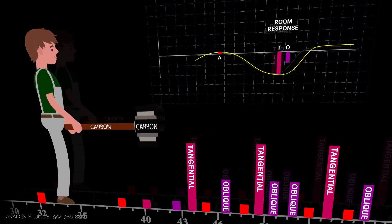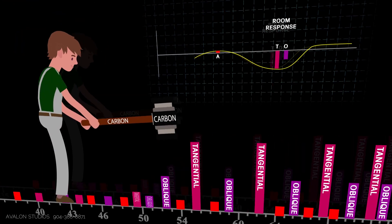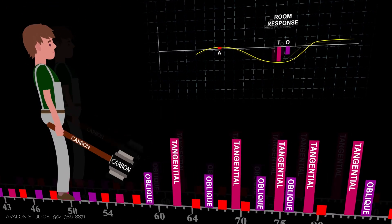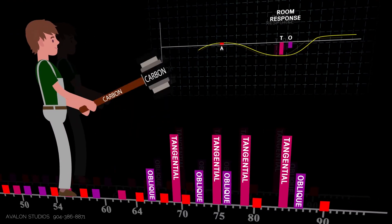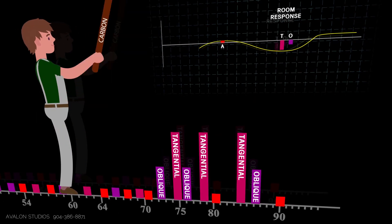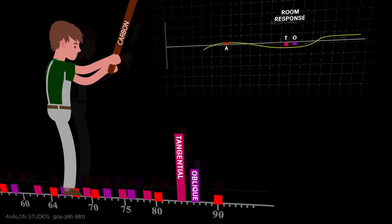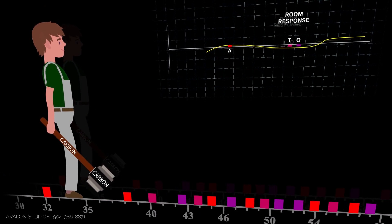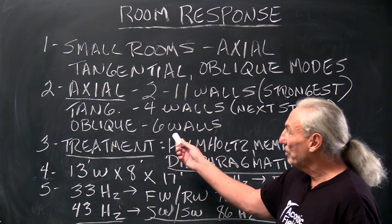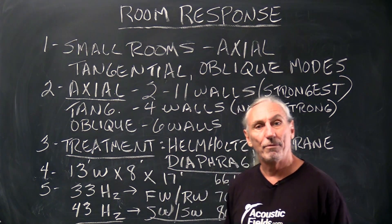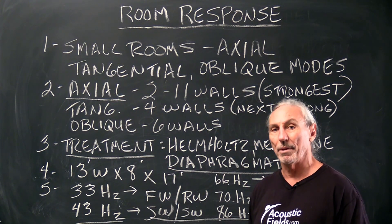And then, as he strikes the tangential, the dips start to go up. So the response starts to smooth. And that's the issue because the tangential modes are the harmonics of the axial modal problems. So they work together. So you have to always treat the low frequency pressure in your room first. I constantly tell people that.